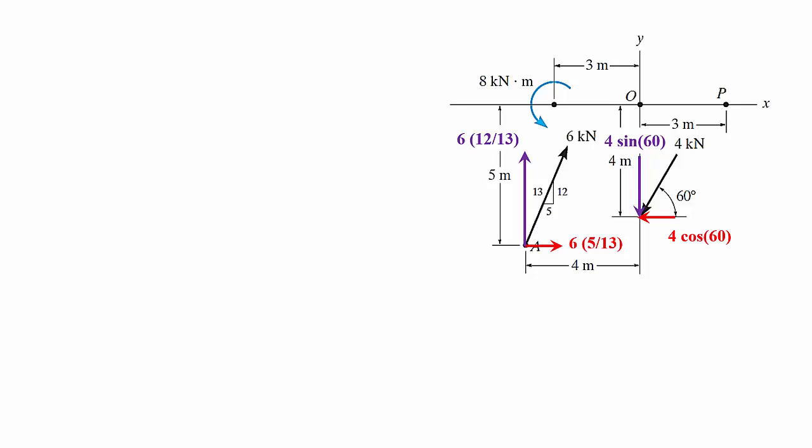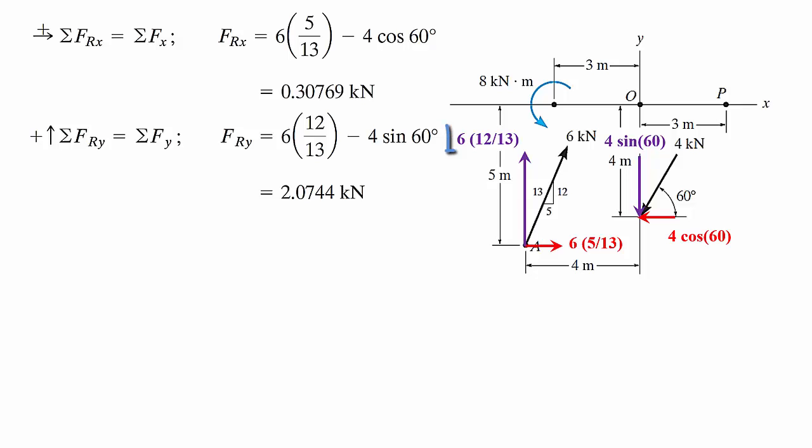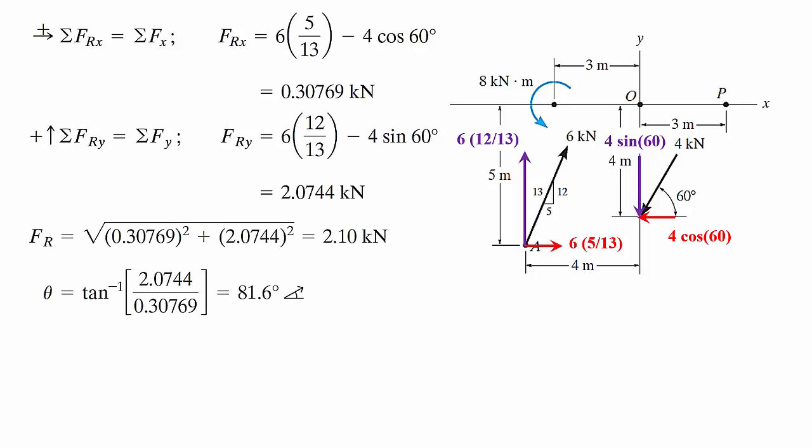Let's do the summation of the forces in the X. If I do the summation of the forces in the X, I will have 6 times 5 over 13 minus 4 cosine 60 and that will give me 0.30769 kilonewtons. If I do the summation of the forces in the Y, I will get 6 times 12 over 13 minus 4 sine 60 and I'll get 2.0744 kilonewtons. Now I apply the square root of the sum of the squares to give the magnitude of the resultant and I'll end up having 2.1 kilonewtons. And if I take the inverse of the tangent, I will have 2.0744 over 0.30769 and I'll have 81.6 degrees.